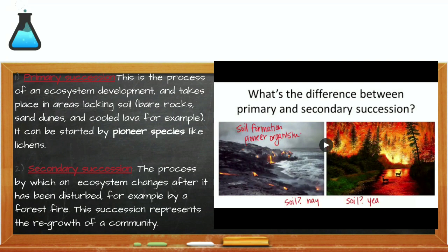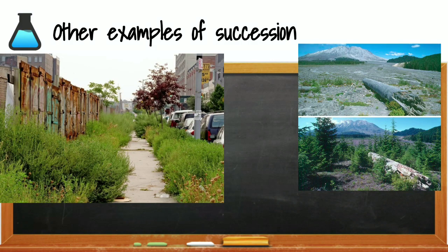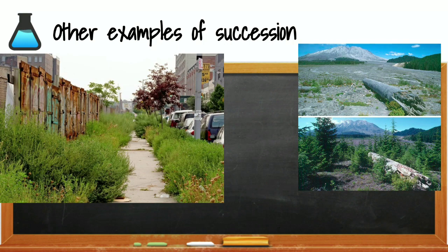Although the starting community in the two types of succession may be different, the thing they share in common is these are gradual changes that happen over a long period of time. One example shows what happens in an unattended city block as slowly grasses and shrubs take over the environment — if given enough time, trees will even grow in this area. Another example is ecological succession that began with the volcanic eruption of Mount St. Helens in 1980. The volcanic eruption disrupted and killed almost all life in the area, but slowly over time the communities changed. They competed for the limiting resources like soil, water, and air until a new climax community was established.